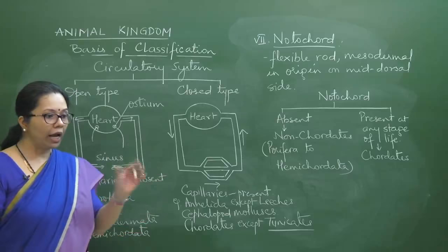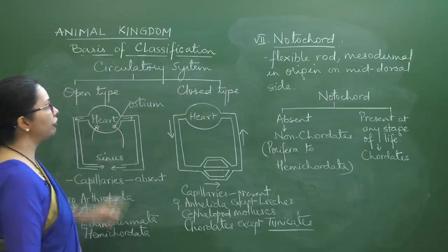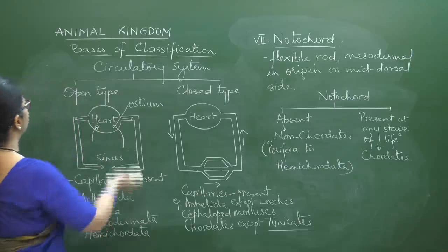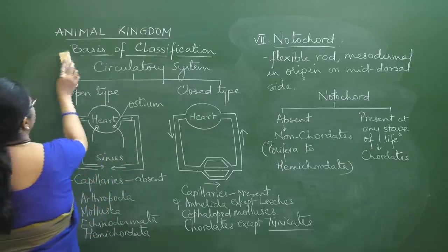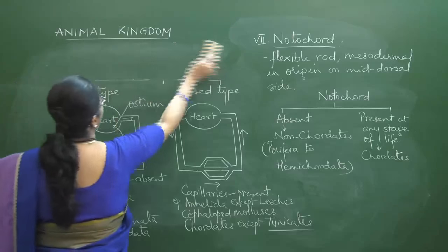Hemichordates don't have a true notochord — what was thought to be a notochord was found not to be one at all, which is why hemichordates were removed from Chordata as far back as 1959. They are now classified as non-chordates. The 11th NCERT correctly places them with non-chordates. With the basis of classification complete, we now start phylum studies, beginning with Porifera.